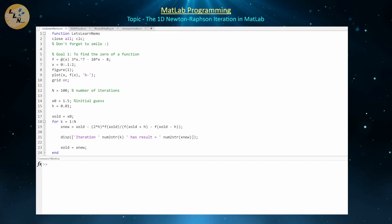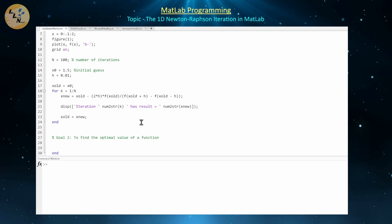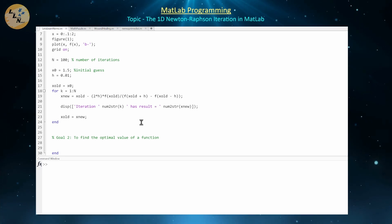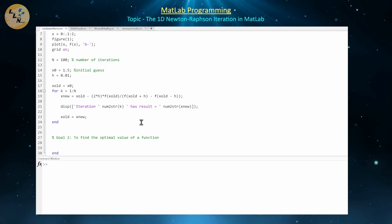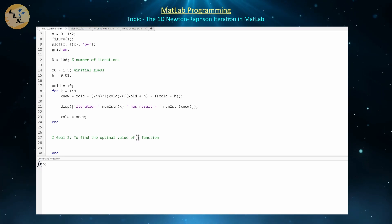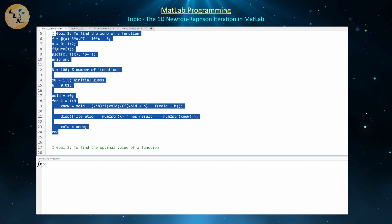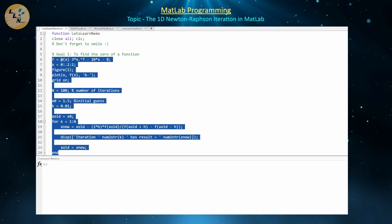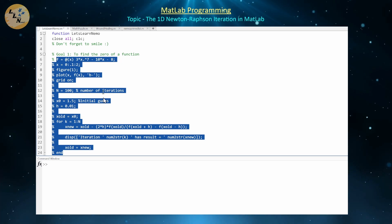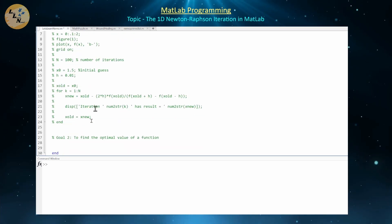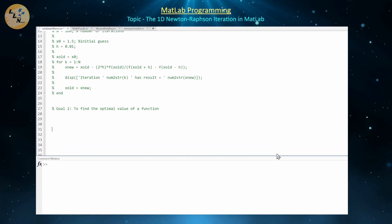Now that we know how to do the Newton-Raphson iteration method for finding the zero of a one-dimensional function, let's switch to goal 2 and use the Newton-Raphson iteration method to find the optimal value of a particular one-dimensional function. When we say optimal, we're allowing it to be a maximum or a minimum — either one is fine. I'm going to comment out all of the previous code. On Windows you can do Ctrl+R to comment out whatever block you have selected.